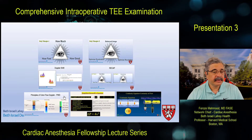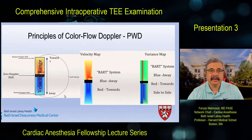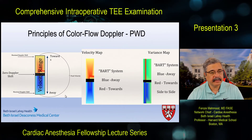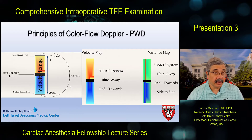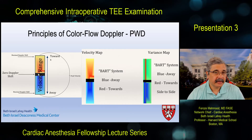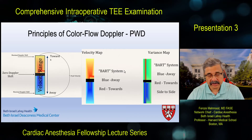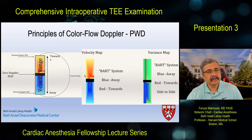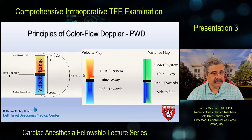We learned the principles of color flow Doppler as a kind of pulsed-wave Doppler. The velocity map is demonstrated using the BART principle: blue away from the transducer, red towards the transducer, and black demonstrating zero Doppler shift. There can also be a variance map to demonstrate side-to-side turbulence, most often used for turbulence in the right and left ventricular outflow tracts.